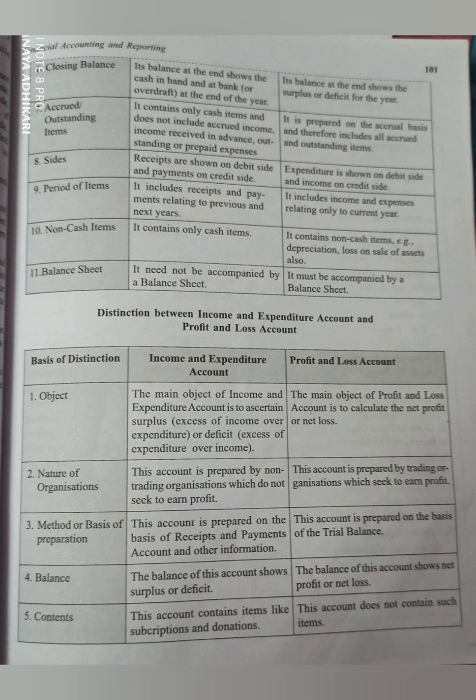Sides: in receipts and payments account, receipts are shown on the debit side and payments on the credit side, while in income and expenditure account, expenditure is on the debit side and income on the credit side. Period: receipts and payments account includes receipts and payments relating to previous and next years, but income and expenditure account includes income and expenses relating only to the current year. Non-cash items: receipts and payments account contains only cash items, whereas income and expenditure account contains non-cash items like depreciation and loss on sale of assets.